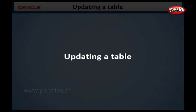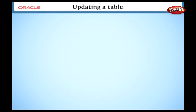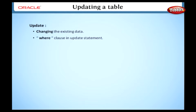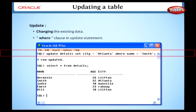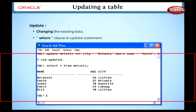Updating a table. Now we are going to discuss how to change the existing data in a table. For this, we need to use the UPDATE statement. We can update a table by changing the existing data. We must include the WHERE clause in an update statement. Here we have been given the query to update a table. Oracle Server processes the query and updates a table in the database. We will observe this practically later in the lesson.